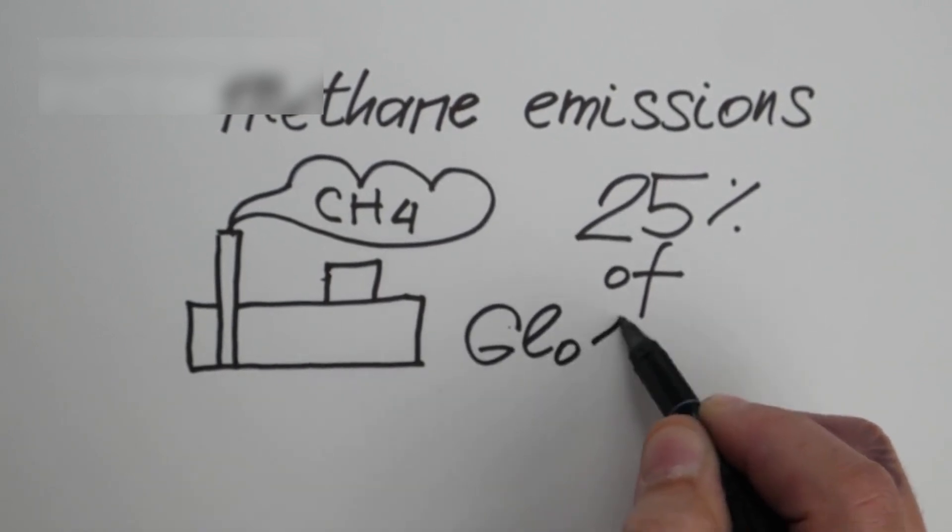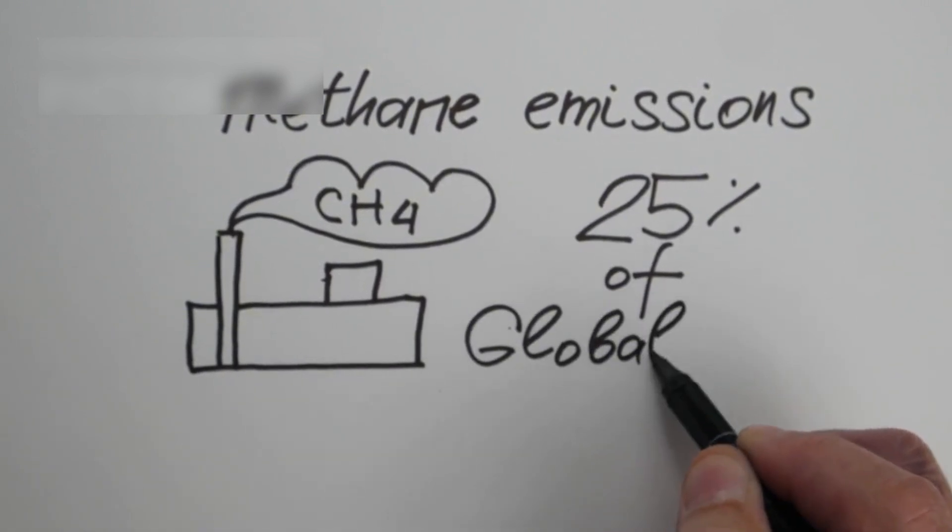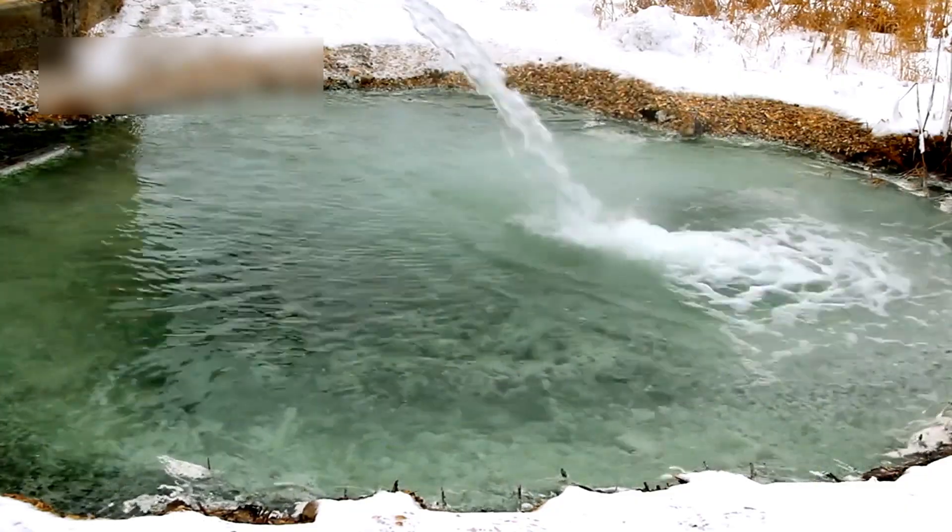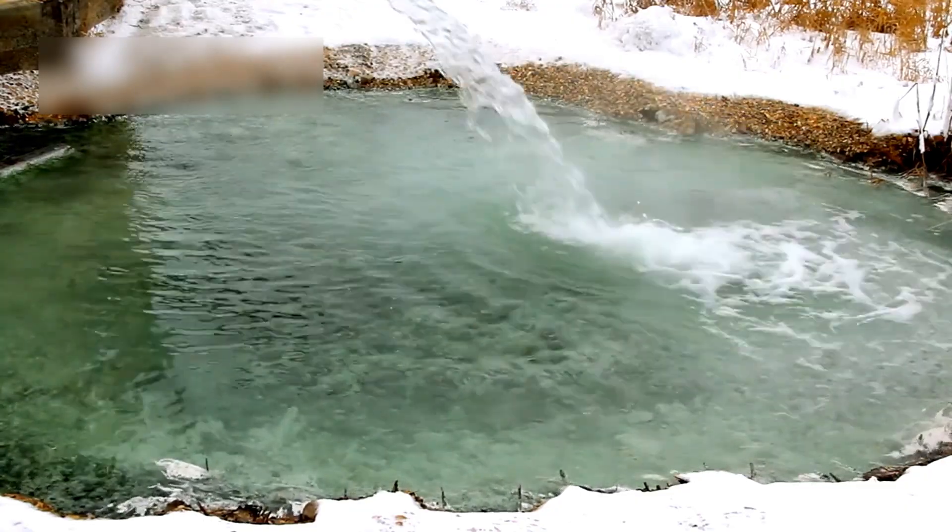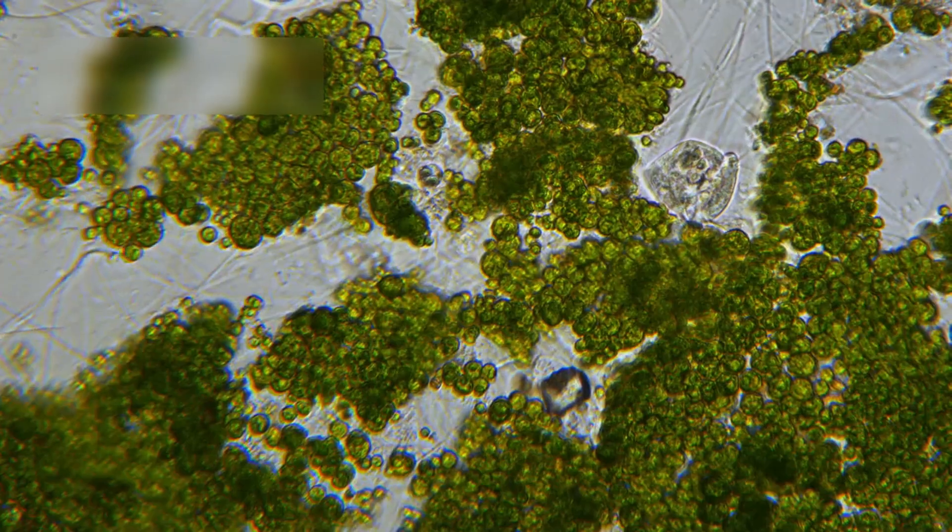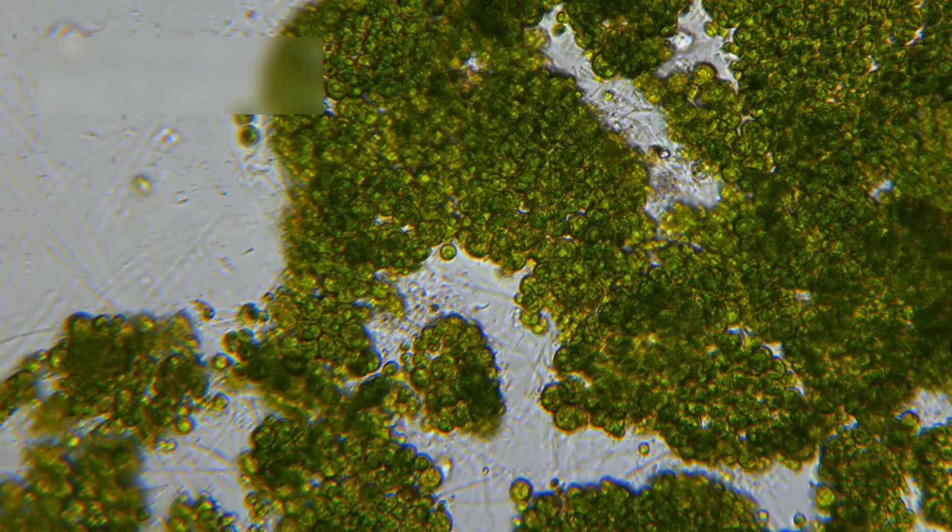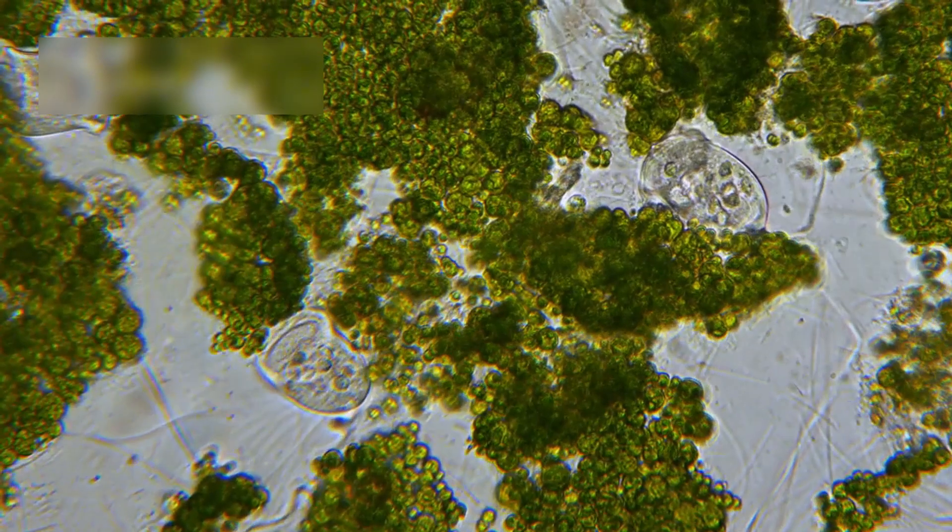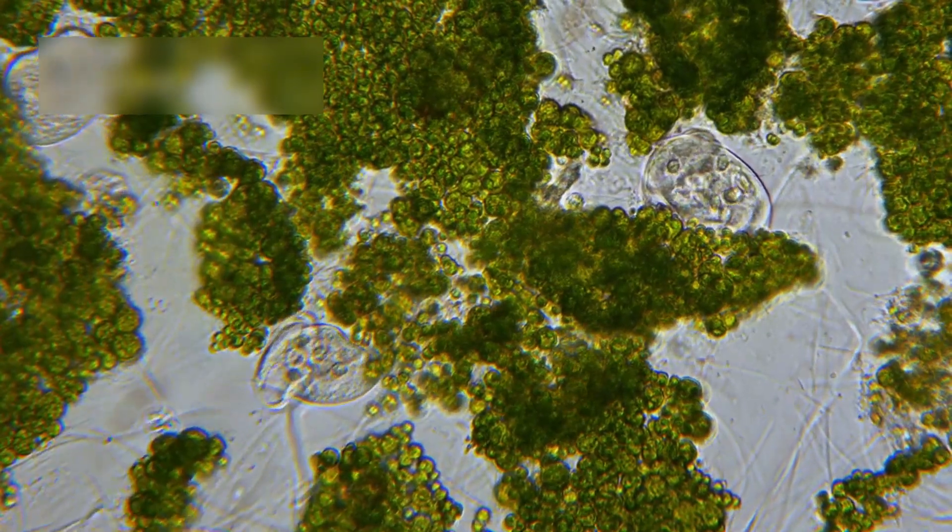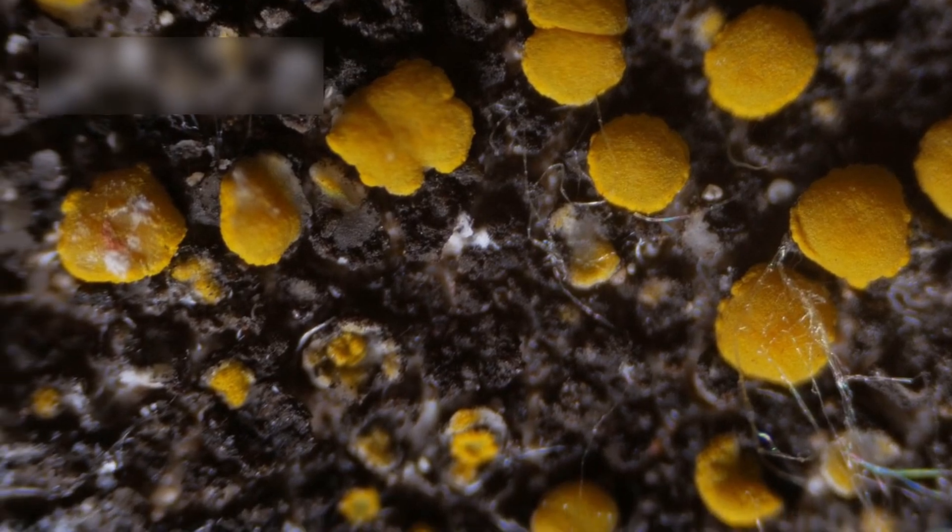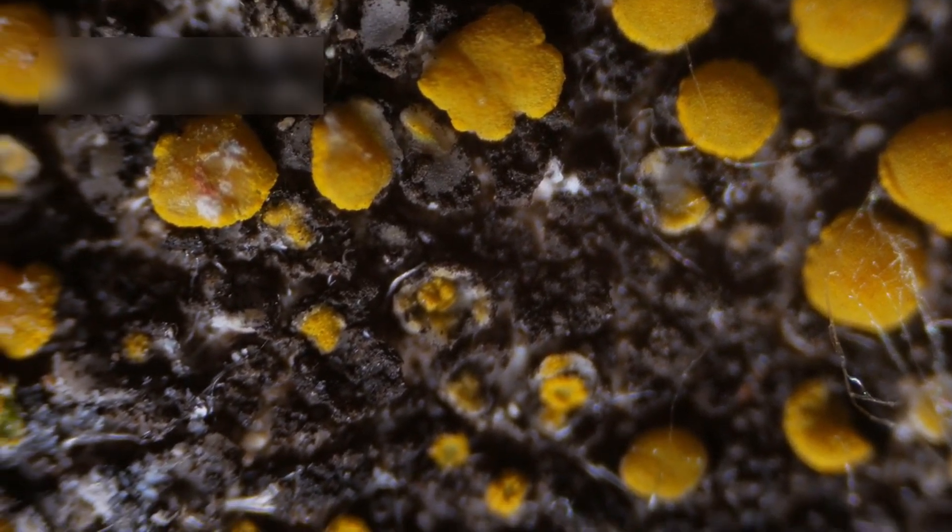But what made headlines was the possible presence of dimethyl sulfide, or DMS. On Earth, DMS is only made by living organisms, mostly tiny sea creatures. Finding DMS outside Earth hints at the possibility of life beyond our planet.